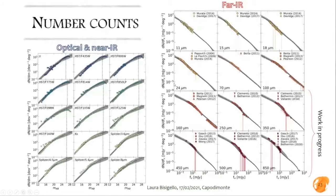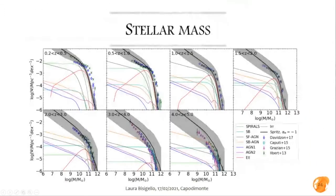These are number counts at different wavelengths, from the U-band through optical and near-infrared, and from 11 micrometers up to the far-infrared at 850 micrometers — this part is still in progress as there are some tensions with observations to improve. In general, the black lines show the fiducial model and the gray area shows the error bars including the high-redshift extrapolation and errors on the starting luminosity function. For optical and near-infrared, data are taken from the CANDELS and GAMMA surveys. The simulation is generally in agreement with observations, with only a few cases showing some tension.